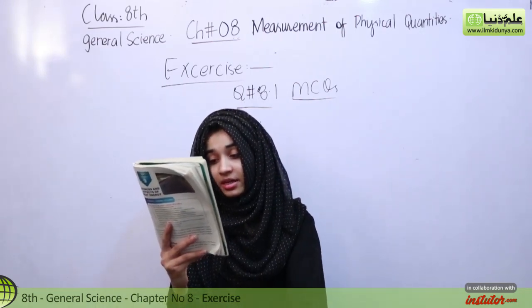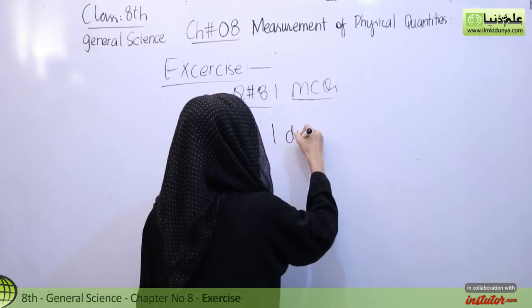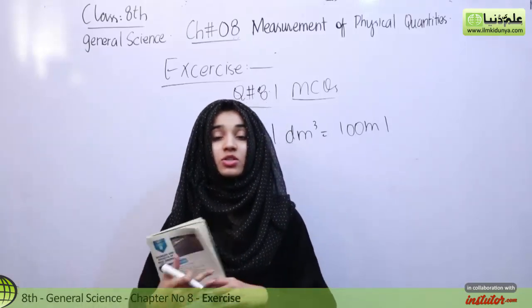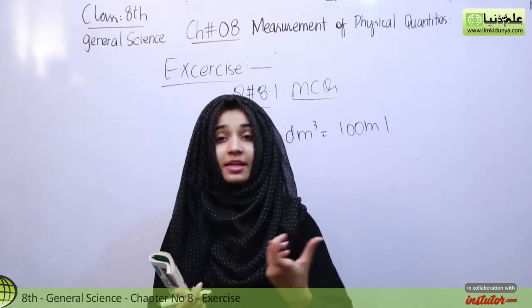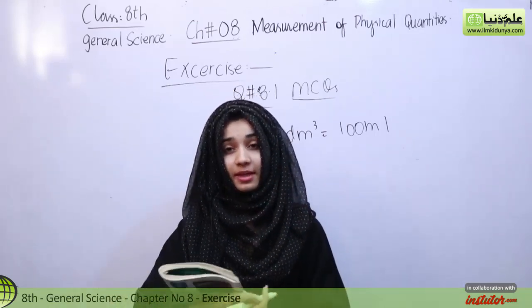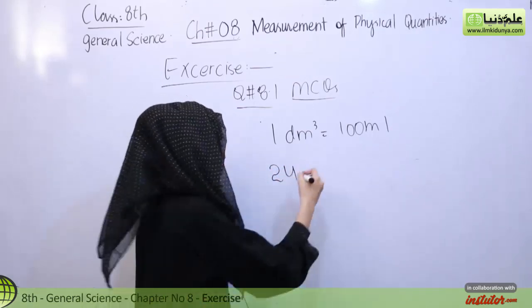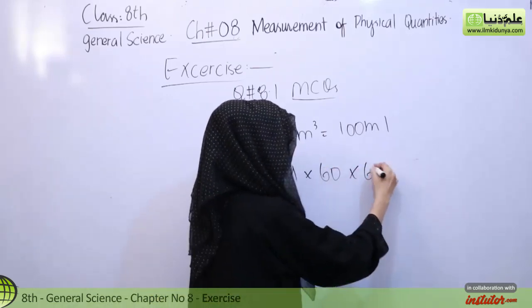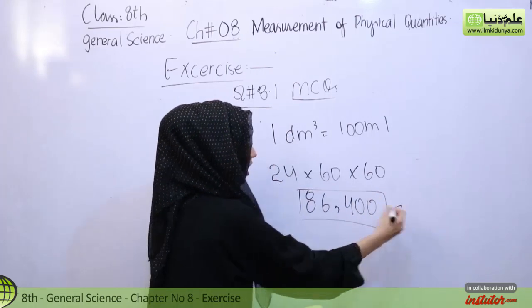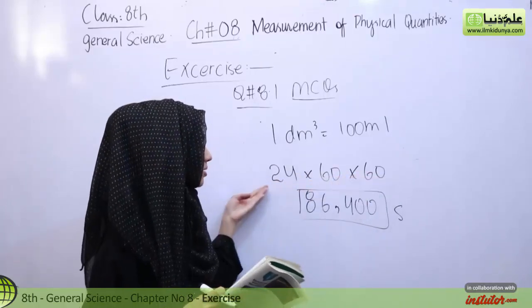How many mm is there in 1 dm cube? 1 dm cube is equal to 1000 mL. How many seconds are there in one solar day? 1 solar day means 24 hours. The sun completes a full rotation in 24 hours. 24 hours, how much time is this? 24 hours, 60 minutes per hour, 60 seconds per minute. So this answer is 86,400. This is how many seconds in one solar day.